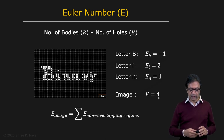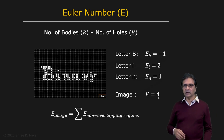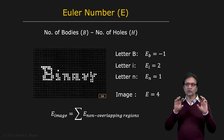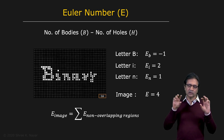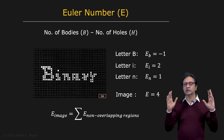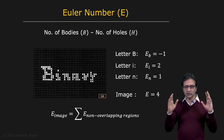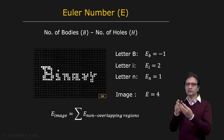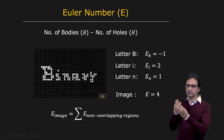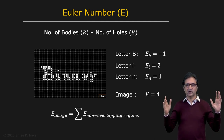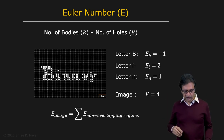An interesting property is that if you take a binary image and divide it up into non-overlapping regions and compute the Euler number of each region, then the Euler number of the full image is the sum of the Euler numbers of the non-overlapping regions. This is important — it means that if you apply an operation to each region that does not change the Euler number, then the Euler number of the complete image remains the same.